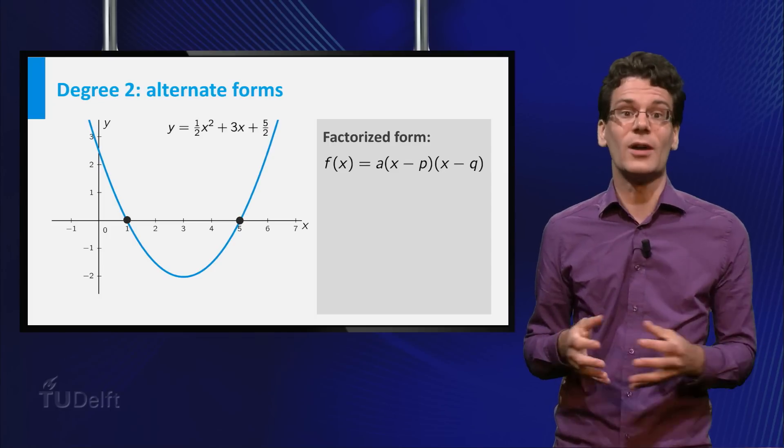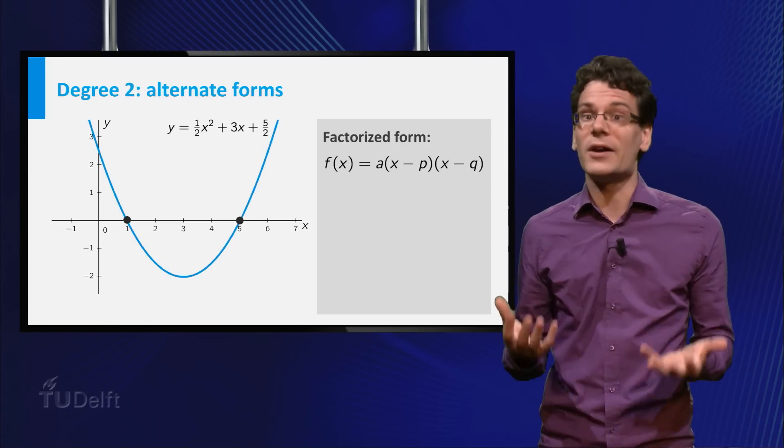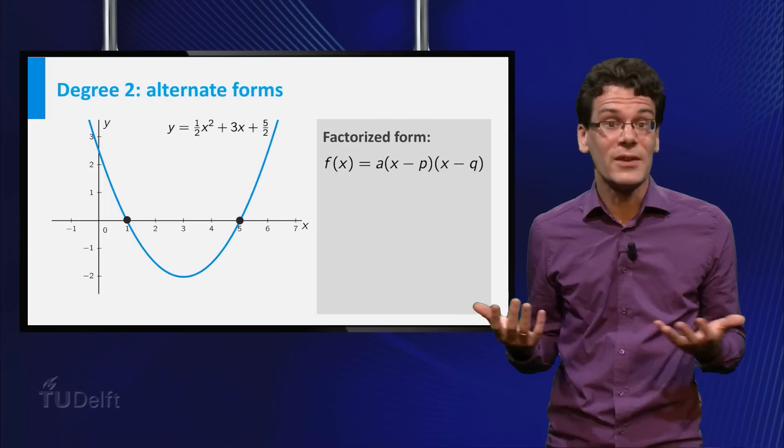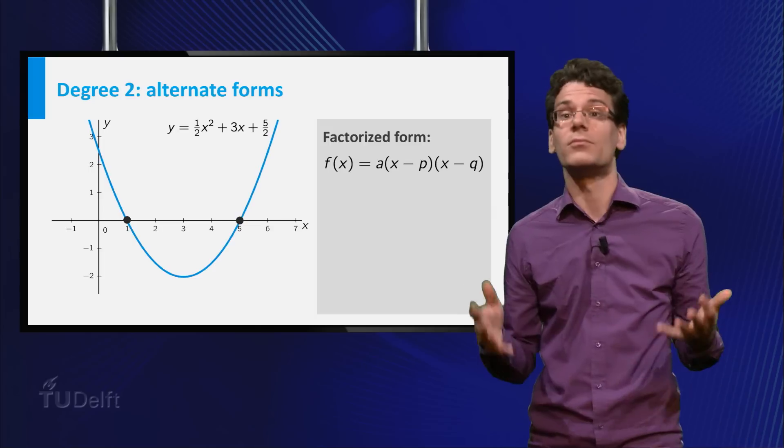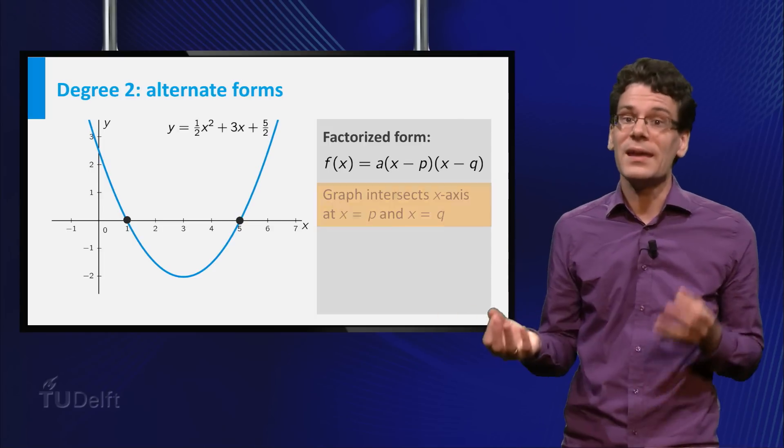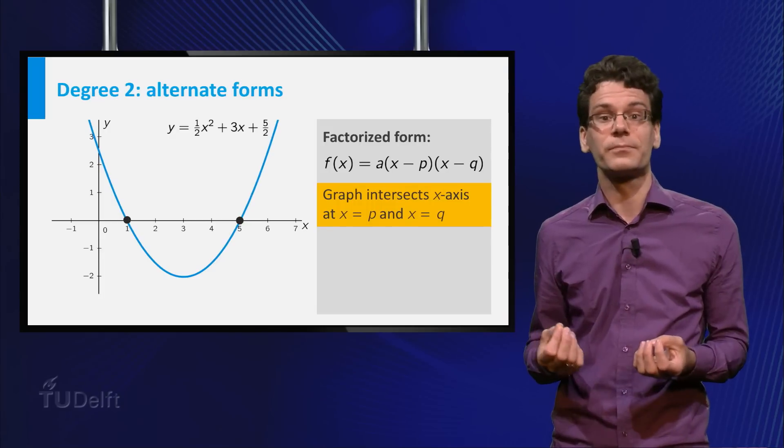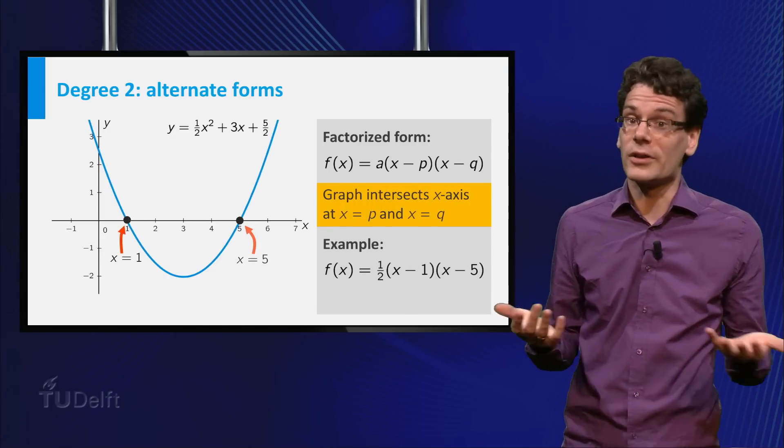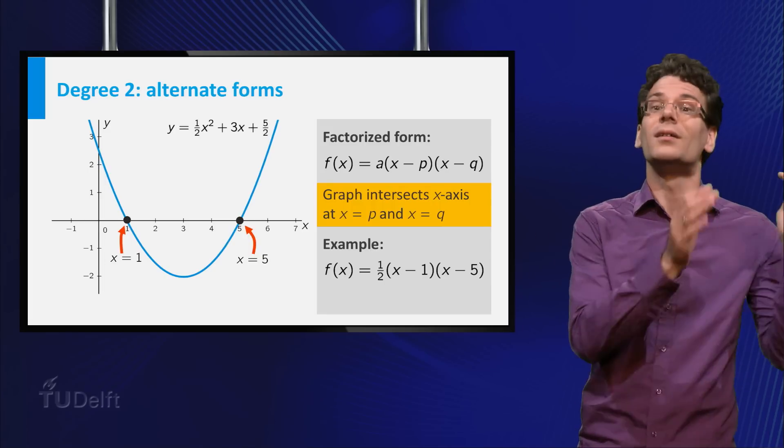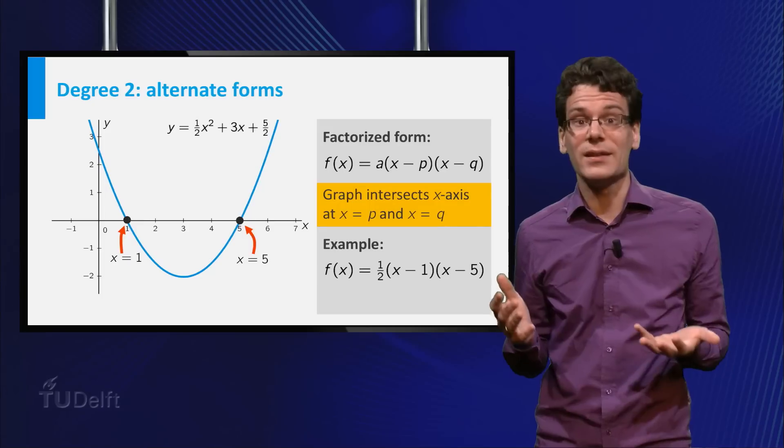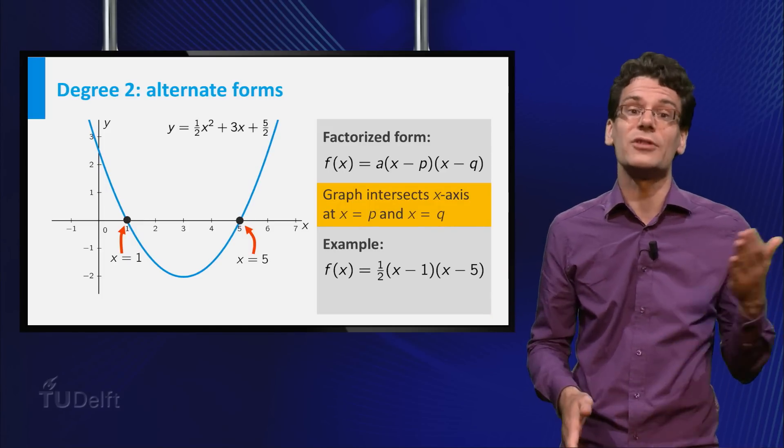The advantage of this form is that it tells you a lot about the shape of the graph. a gives information about the wideness of the parabola, and whether it opens upward or downward, just as before. p and q are precisely the x-coordinates of intersection points with the horizontal axis. The polynomial function in our example can be rewritten as 1/2 times (x minus 1) times (x minus 5), and indeed you see that the graph intersects the horizontal axis in x equal to 1 and x equal to 5.